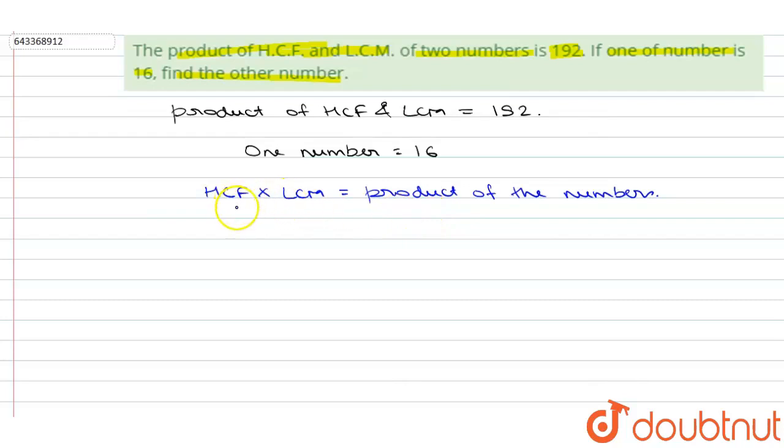So the product is given as 192, one number is 16, and we have to find the second number. So simplifying it from here, second number will be equal to 192 upon 16.